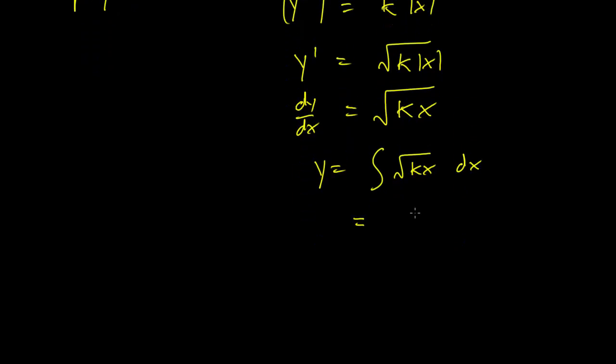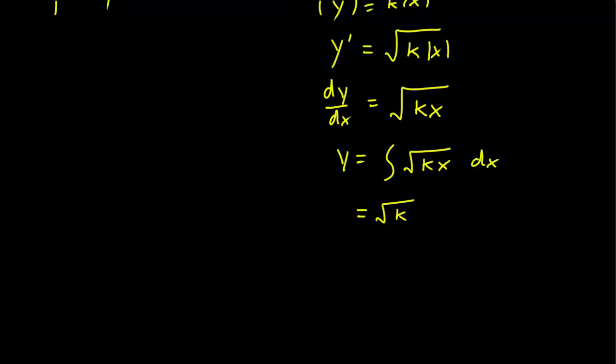And this is just going to be root k times x raised to the 3 over 2 power over 3 halves plus c. And we just get a general solution of y equals root k times 2x to the 3 halves over 3 plus c.